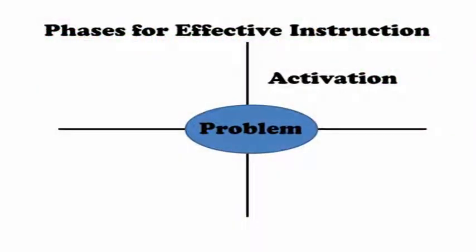The next stage is activation. This is when learners are required to do one of three things: one, recall previous knowledge; two, recall a structure for organizing that knowledge; or three, they are given a structure for organizing the new knowledge. It's important to note that the recall of prior knowledge must directly be related to the problem or task they are asked to solve. If inappropriate knowledge structures are activated, that can hinder the overall learning process.